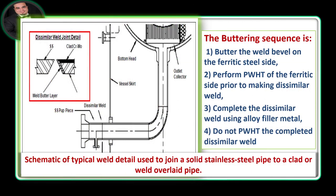As illustrated in the schematic of a typical weld detail used to join a solid stainless steel pipe to a clad or weld-overlaid pipe, the buttering sequence is as follows: butter the weld bevel on the ferritic steel side; perform PWHT of the ferritic side prior to making the dissimilar weld; complete the dissimilar weld using alloy filler metal; do not PWHT the completed dissimilar weld.